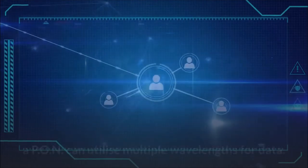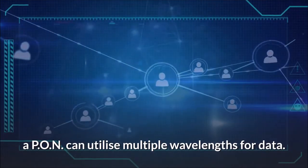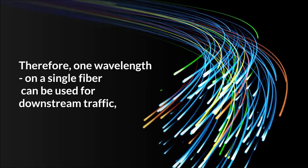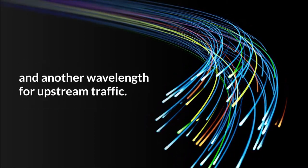By dividing the bandwidth in this manner, a PON can utilize multiple wavelengths for data. Therefore, one wavelength on a single fiber can be used for downstream traffic, and another wavelength for upstream traffic.